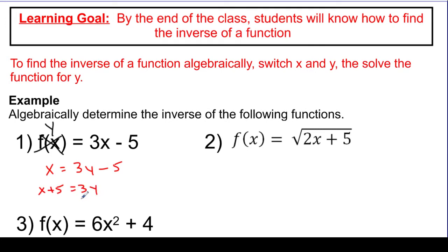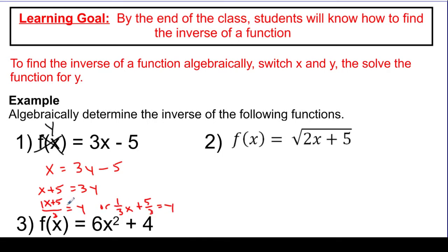And then I would need to divide by 3. We can represent this a couple of different ways — we could represent it as x plus 5 over 3, and that's y. Or we could represent it by simplifying the parts. Remember, this is a 1, so I could say 1 third x plus 5 thirds. That's another way of writing it, and that equals y.